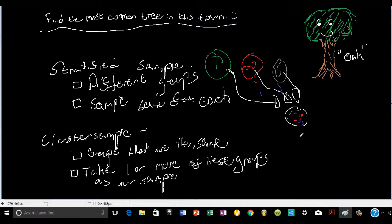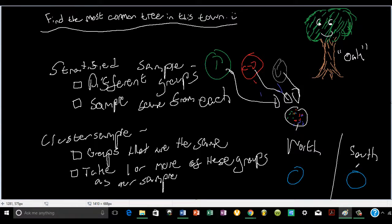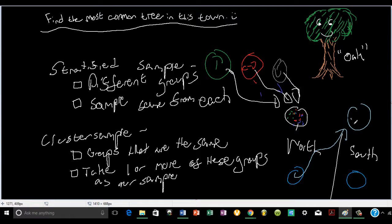Now for the cluster sample, we're going to divide all of the trees into groups that are the same. Let's say we know that the north side and the south side of the town have the same variability in the trees — the same type of trees, about the same quantity. We could divide it into north, south, east, and west for better results, but for this example we'll just do north and south. For a cluster sample, I'm going to take either this group, or that group, or both. I just have to make sure that each group is the same. The sample is going to consist of only members from one of these clusters.